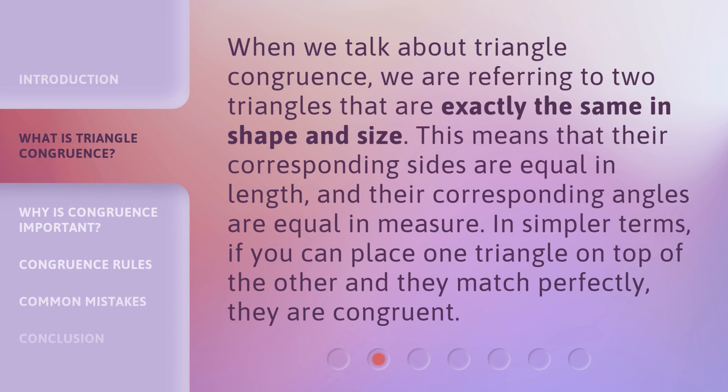When we talk about Triangle Congruence, we are referring to two triangles that are exactly the same in shape and size. This means that their corresponding sides are equal in length and their corresponding angles are equal in measure. In simpler terms, if you can place one triangle on top of the other and they match perfectly, they are congruent.